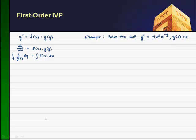So again, the first thing I want to do is write the Y prime as DY/DX. I noticed on the right-hand side that I have a function in X and a function in Y. So let's just go ahead and rewrite this: 4X cubed E to the minus Y.